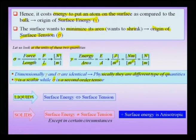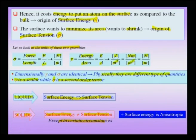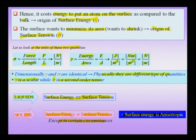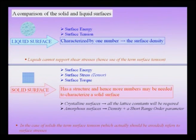In liquids, surface energy and surface tension are equivalent concepts and sometimes can be interchangeably used. But in the case of solids, it is important to note that surface energy is not equivalent to surface tension. Additionally, surface energy can be anisotropic when it comes to solids — meaning it is direction-dependent — which is something not present in liquids, where we assume the surface energy is isotropic. Therefore, I need to differentiate between liquid and solid surfaces with respect to quantities like surface energy and surface tension.